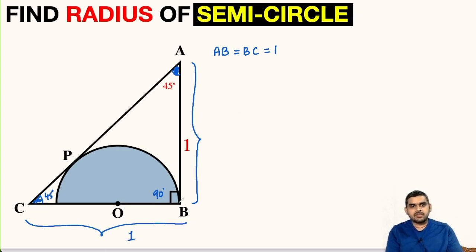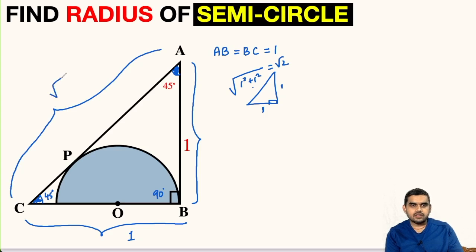Now if AB is one unit, BC is one unit, then by Pythagorean theorem this will be square root of one squared plus one squared, that is root 2. So this entire length AC is root 2.